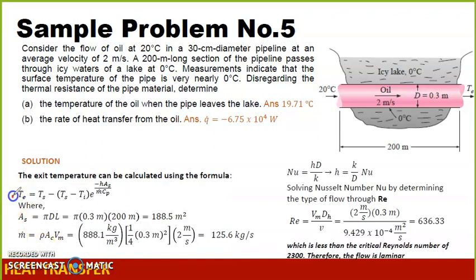We can use this equation. If you're going to look at the equation, we already have surface temperature, that is 0 degrees Celsius, the inlet temperature 20 degrees Celsius. If you're going to look at the values, we already have CP. Those are the values that we have. The rest are still unknown.